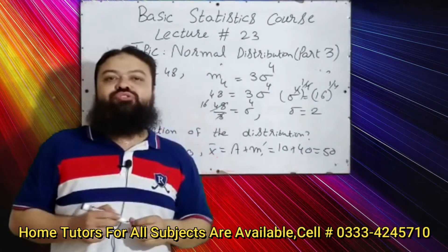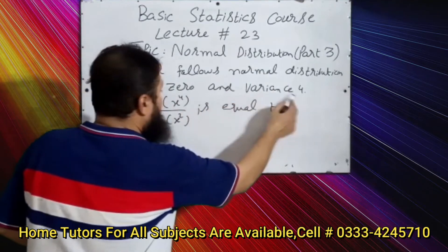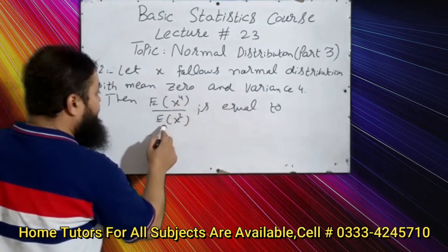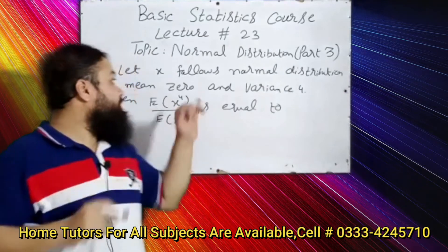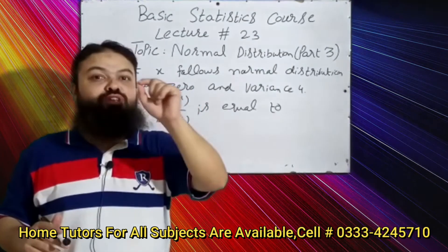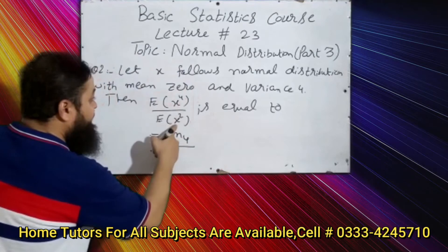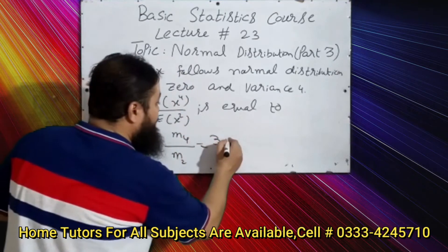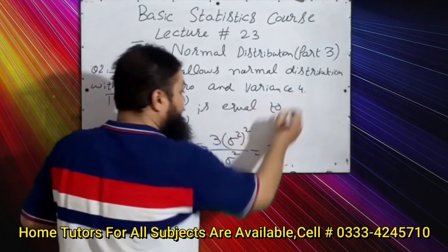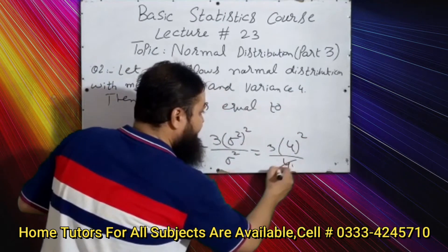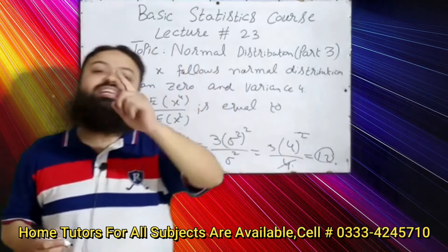Question number two: let X follow normal distribution with mean 0 and variance 4. Then E(X⁴) / E(X²) is equal to? Dear students, when the mean is 0, moments about the mean and about the origin are always equal. So E(X⁴) = m4 and E(X²) = m2. We know m4 = 3σ⁴ = 3(σ²)², and m2 = σ². So the ratio is 3σ² = 3 × 4 = 12. That is the correct option.